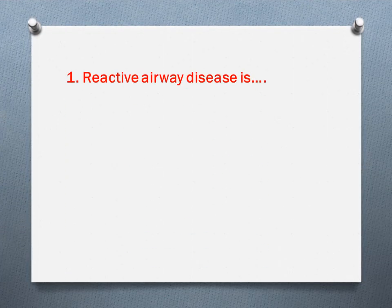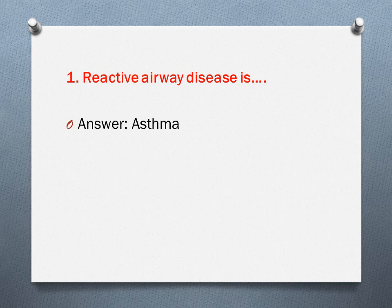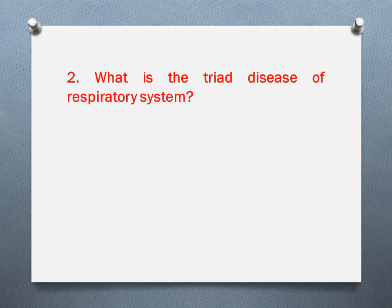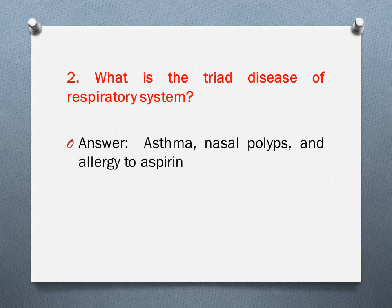Question one: Reactive airway disease is? The answer is asthma — asthma is a reactive airway disease. Question two: What is the triad disease of the respiratory system? The answer is asthma, nasal polyps, and allergy to aspirin — this is the triad disease of the respiratory system.